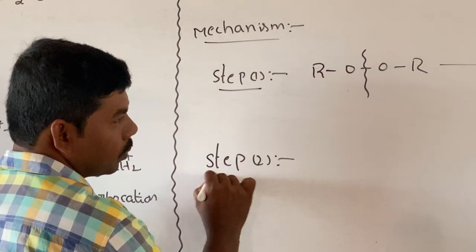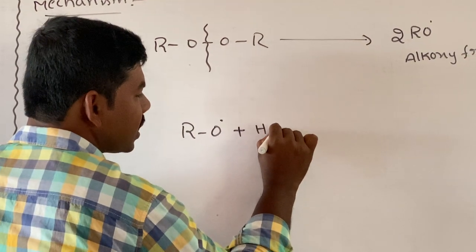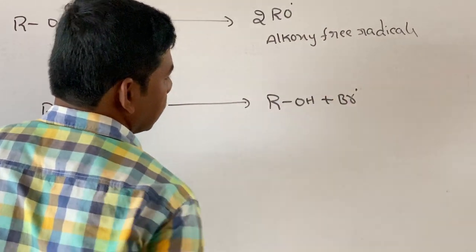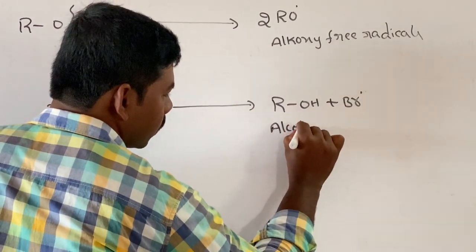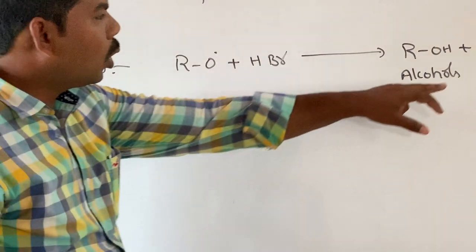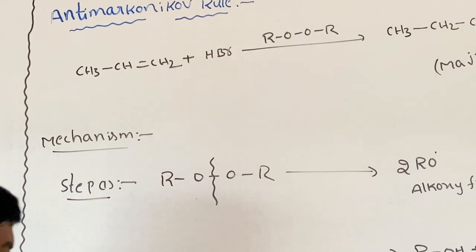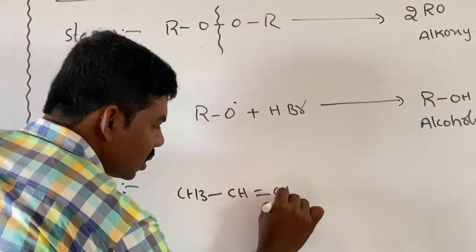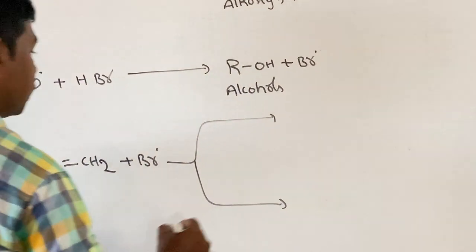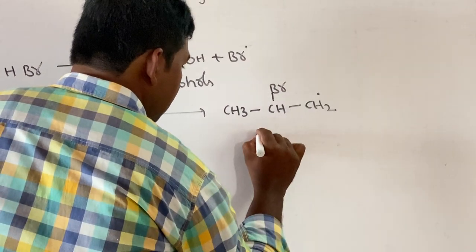Step 2: the alkoxy radicals react with hydrogen bromide to give RO-H plus bromine free radicals (Br•). Step 3: these bromine free radicals react with the unsymmetrical alkene propene — CH3-CH=CH2 plus Br• — to give a primary free radical CH3-CH2-CH2• (primary free radical).